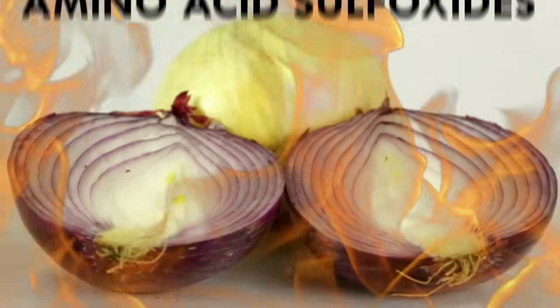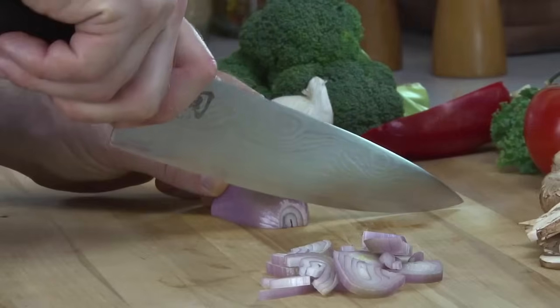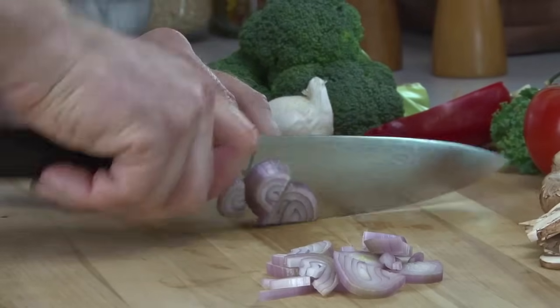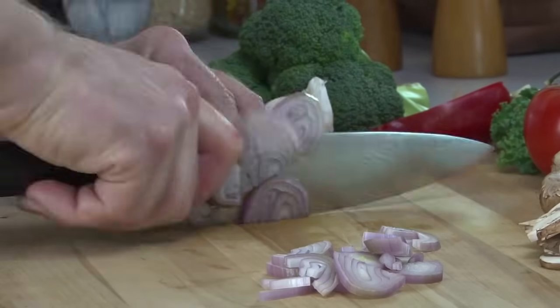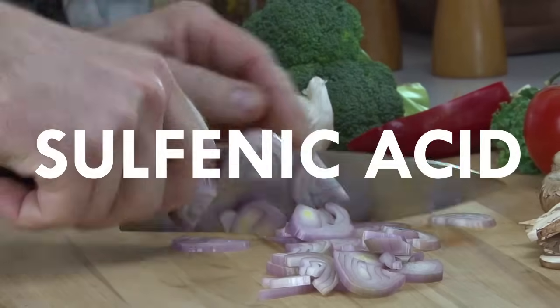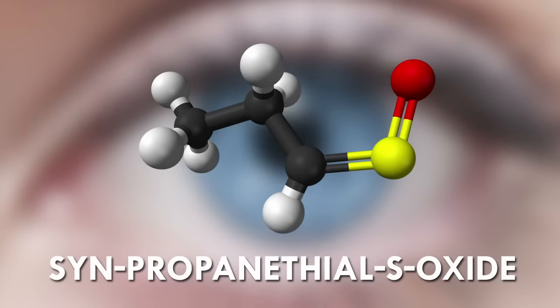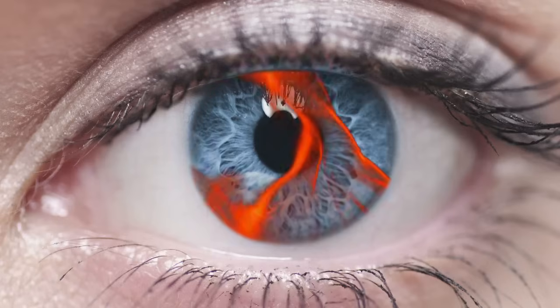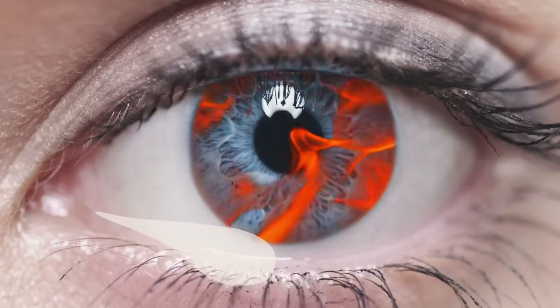Onions contain compounds called amino acid sulfoxides. Every knife stroke into an onion pops open cells releasing these amino acid sulfoxides and other enzymes to produce a compound called sulfenic acid. The sulfenic acid and the onion enzymes then react to form synpropanethyl S oxide. This is a compound that sends a fiery message into the nerve centers of your eyes which then calls on your body's fire department to wash the irritant away with tears.